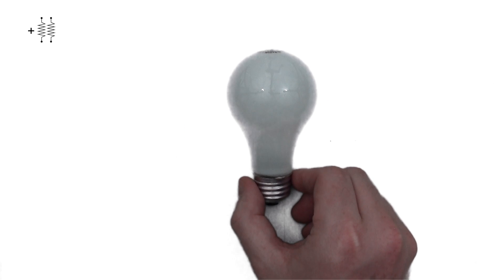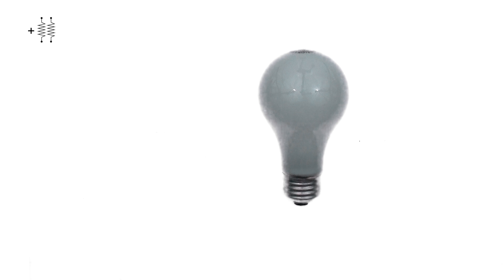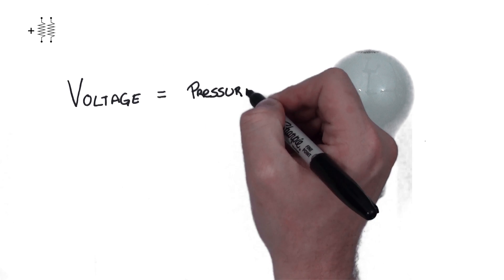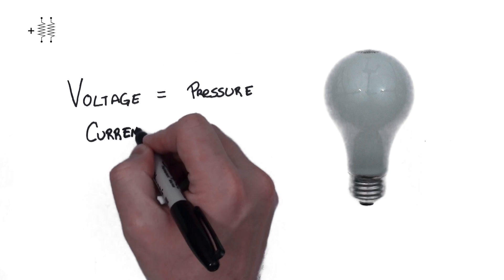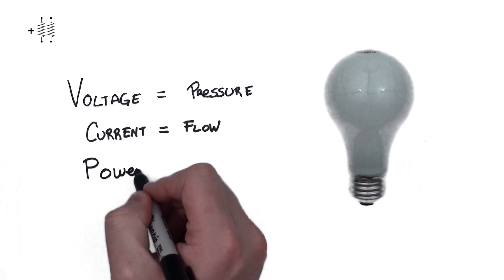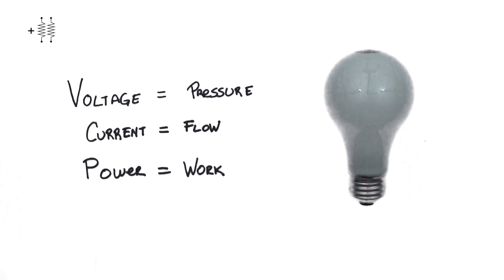In this video, using just this light bulb, we learned that voltage is pressure, current is flow, and power is work. While these are all different things, they are related to each other.